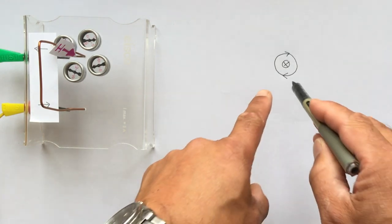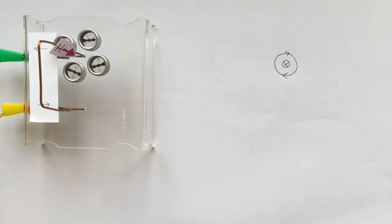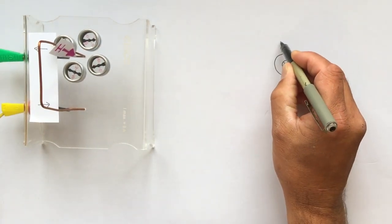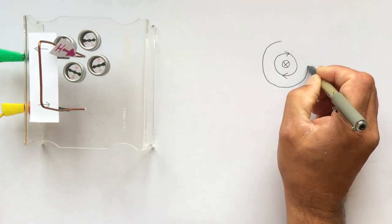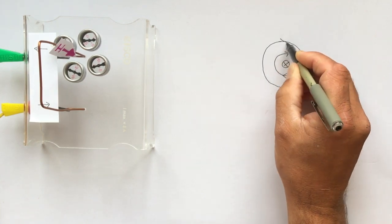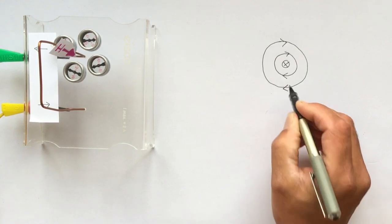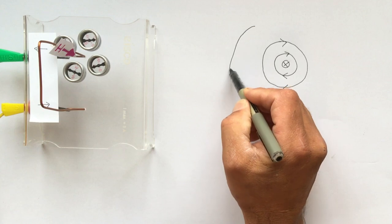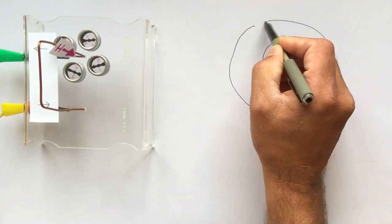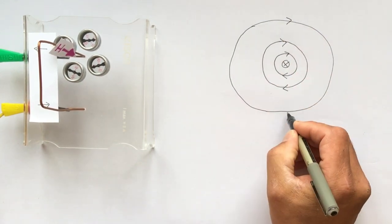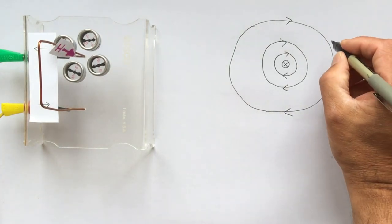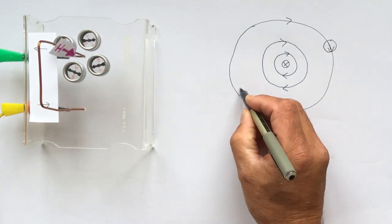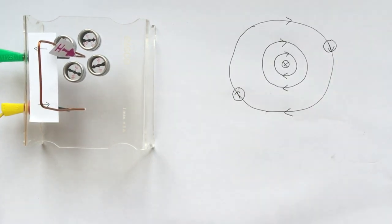To show that the magnetic field gets weaker with distance, draw three concentric circles with the spacing getting larger as you move outward. The final line should be noticeably further out than the others to show the field is getting weaker. A compass placed at different distances would point in the direction of the circular field at that point.